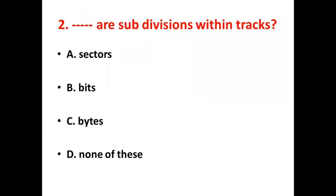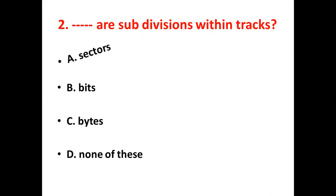Second bit: Dash are subdivisions within tracks. Option A, Sectors. Option B, Bits. Option C, Bytes. Option D, None of these. The answer is Option A, Sectors.